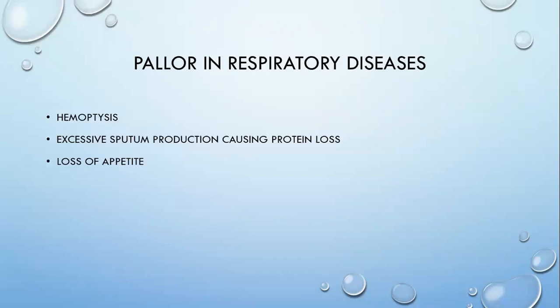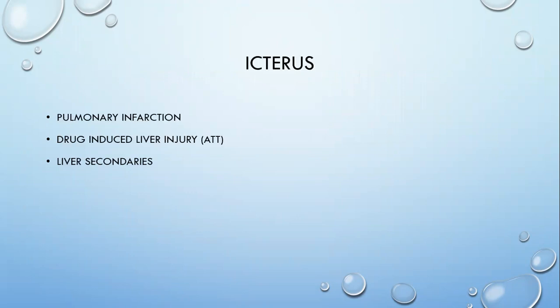A few things which can be seen in the lips, face, and nails are pallor, icterus, and clubbing. Pallor in respiratory disease can signify hemoptysis. Chronic hemoptysis can cause iron deficiency and even cause koilonychia. Excess sputum production causing protein loss — any hypoalbuminemia will cause koilonychia. Anorexia causes reduced intake, causing iron deficiency and pallor. In pulmonary disease, it could be a pulmonary infarction. A patient with tuberculosis started on ATT who develops drug-induced liver injury can develop icterus. Liver cirrhosis and liver secondaries in primary lung cancer can also cause icterus.